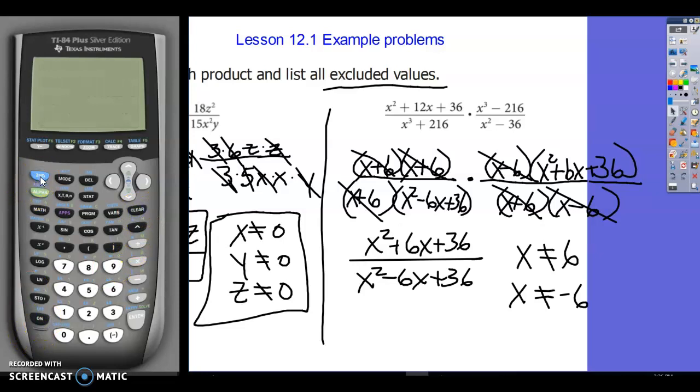So we're going to go y equals. And we're going to graph x squared minus 6x plus 36. Let's change my window a bit so maybe I can see it.